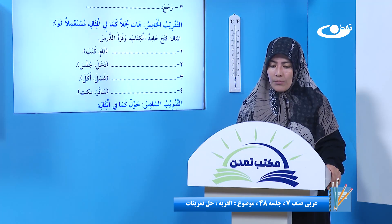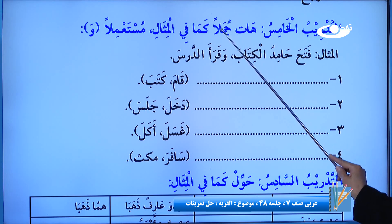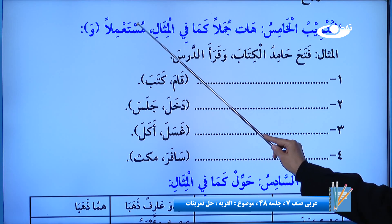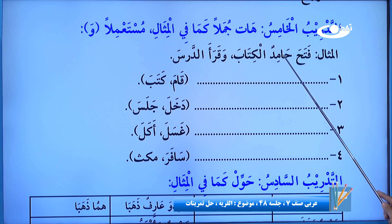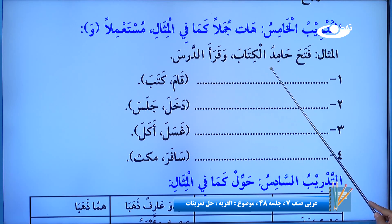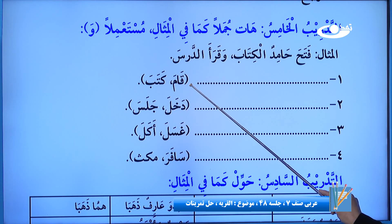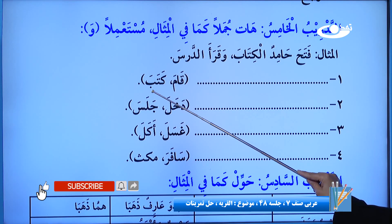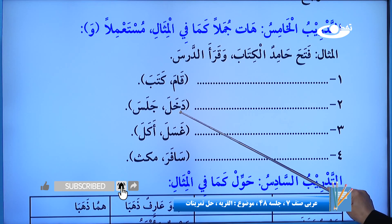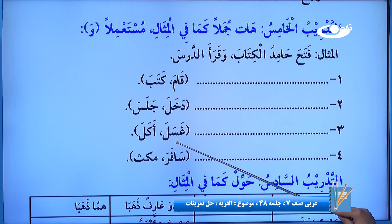تمرین بعدی که از شما خواسته جمله بسازین اما با این سبک که دو فعل را با واو به هم وصل کنین، یعنی دو جمله مرتبط با هم بسازین. فعل امر است، مثل مثال که استعمال شده: فتحَ حامدٌ الکتابَ وقرأَ الدرسَ - باز کرد حامد کتاب را و درس را خاند. مثلاً: قامَ علیٌ من مکانِهِ وکتبَ الرسالة، دخلَ علیٌ في المجلسِ وجلسَ قریبًا من أمِّهِ - نزدیک مادرش نشست، غسلَ علیٌ یدیهِ.